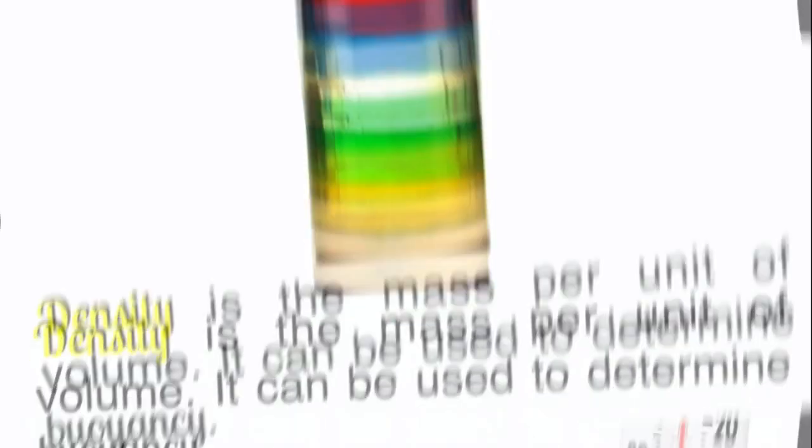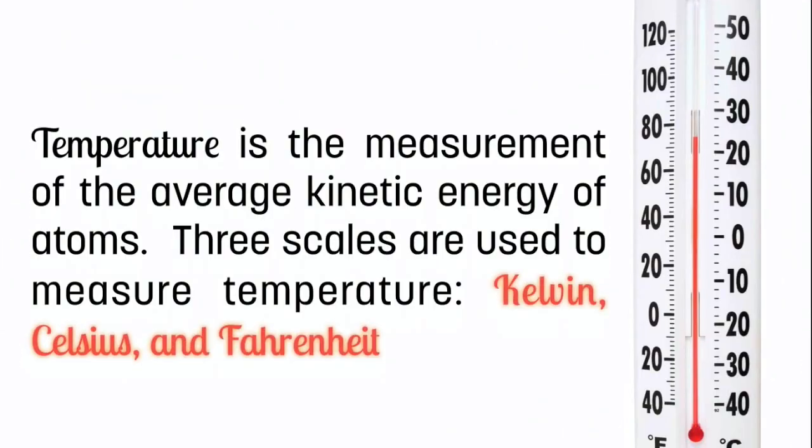Temperature. That's the measurement of the average kinetic energy of atoms. Three scales are used to measure temperature and we will use all three: Kelvin, probably for the hottest objects that exist in the universe like stars, the Celsius which is the metric quantity we still will use that often, and then Fahrenheit. If you watch the weather report, they're reporting it in the Fahrenheit temperature, which is more of a customary or United States version. Either way, we use a thermometer to measure temperature.